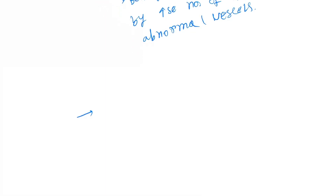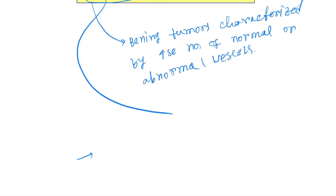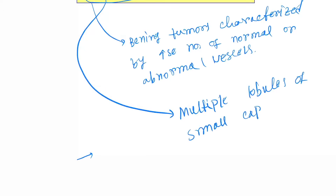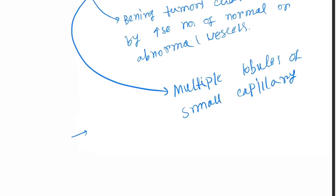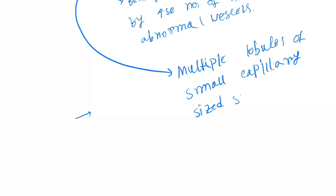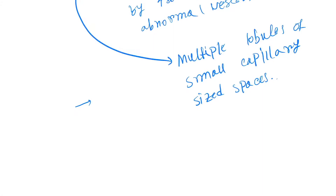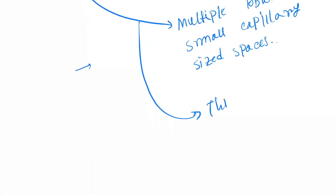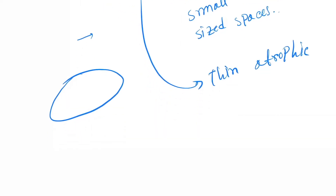In capillary hemangioma, as the name implies, there will be multiple lobules of small, capillary-sized vascular spaces in the histopathological slide. The next feature is that the epidermis will be thin and atrophic.